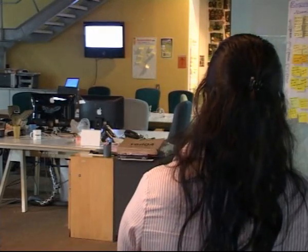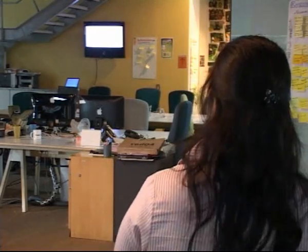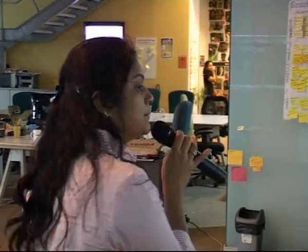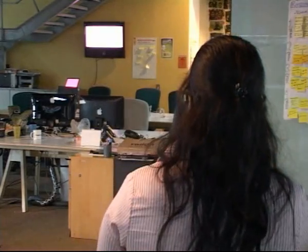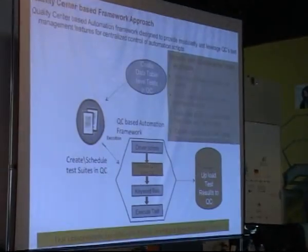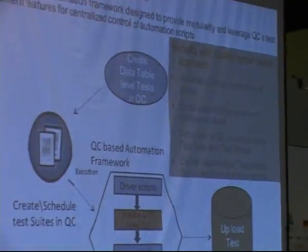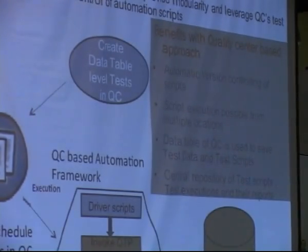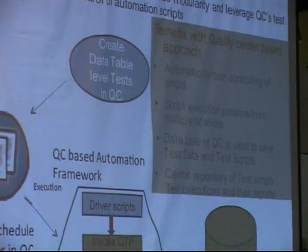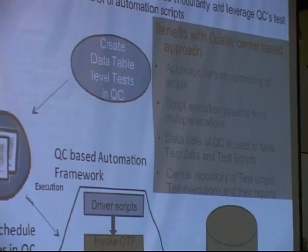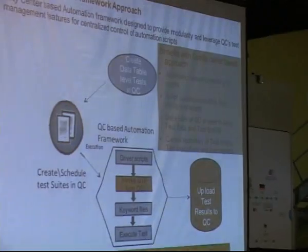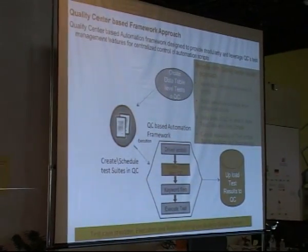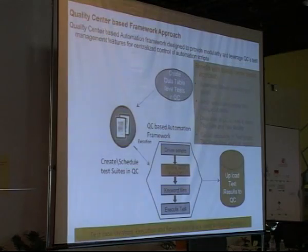These are the benefits we get from this approach. Version control, script repository, and result repository are all saved to quality center automatically. Scripts are also executed from quality center, so there is no dependency on a physical machine. Quality center handles the run line and carries out the execution, with data managed centrally.